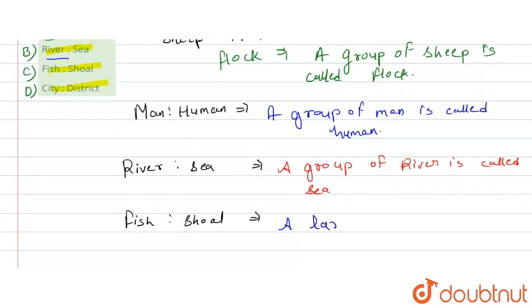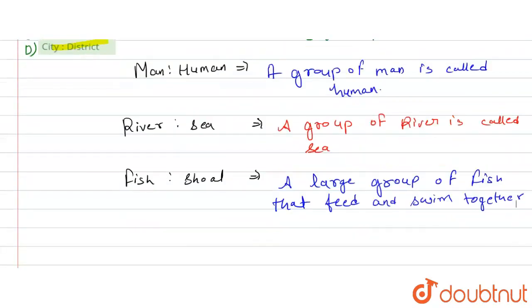A large group of fish that feed and swim together. Then, we have given city and district.